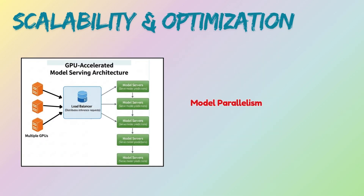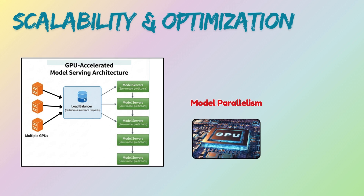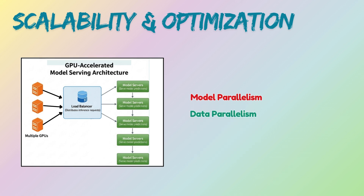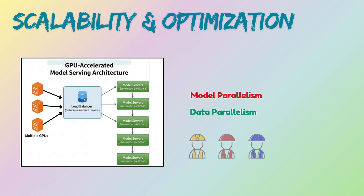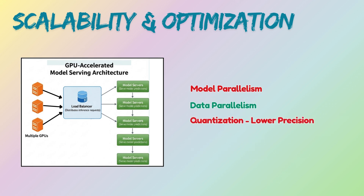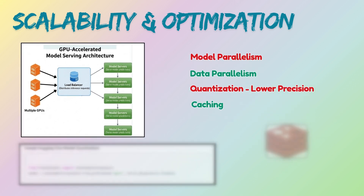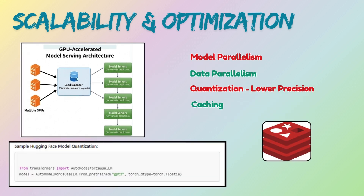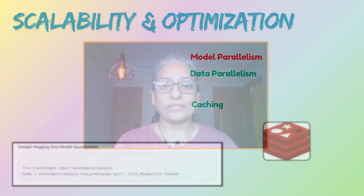In model parallelism, we split model layers across GPUs. Data parallelism splits data batches across workers. Quantization uses lower precision like FP16 for faster inference. Caching pre-computes and stores frequent responses at the API layer.